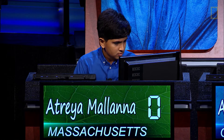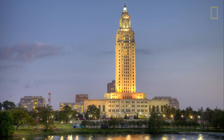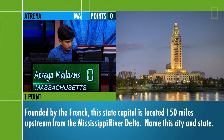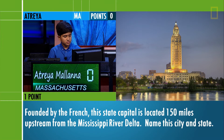Atreya. Founded by the French, this state capital is located 150 miles upstream from the Mississippi River Delta. Name this city and state. Baton Rouge, Louisiana. That is correct.